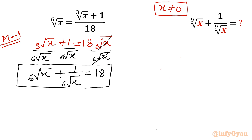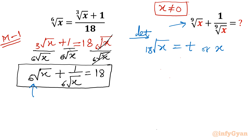Now I will use substitution in this method. We have the 6th root here and the 9th root in the expression to find. So I will consider the LCM of 6 and 9, which is 18. I will let the 18th root of x equal to t as our substitution, or equivalently x equals t to the power 18. So the 6th root of x becomes t cubed, and the 9th root of x becomes t squared.